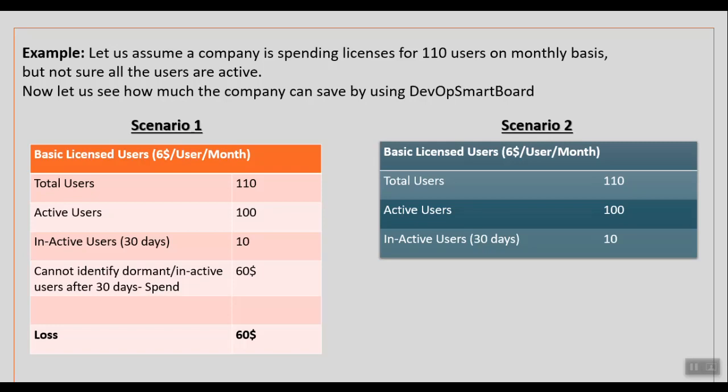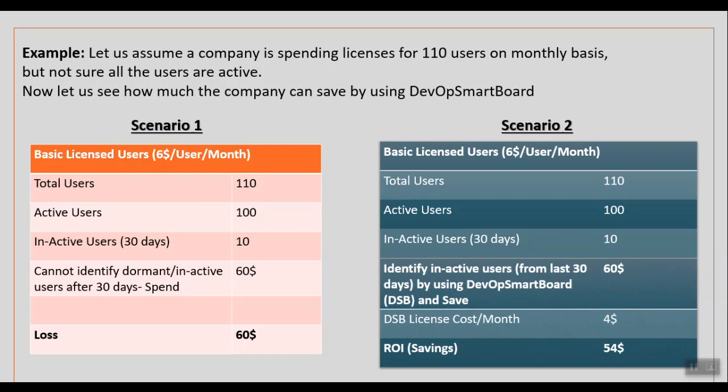Now in the scenario where you are using DevOps Smart Board: with the same 110 users — 100 active and 10 inactive — the tool identifies the inactive users so you can downgrade them to Stakeholder access and save $60. The DevOps Smart Board license costs just $4 per month, so the ROI is approximately $54 per month.